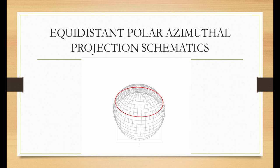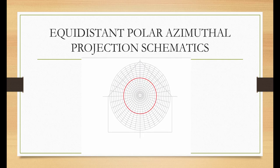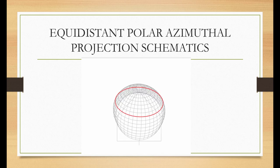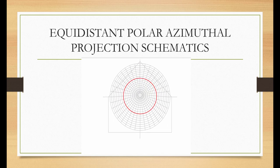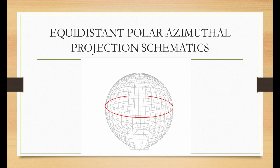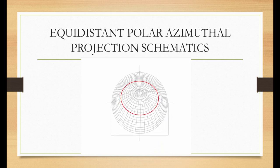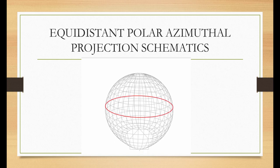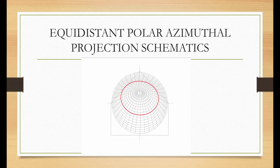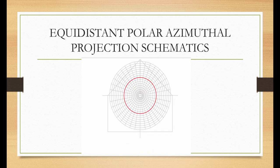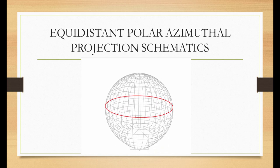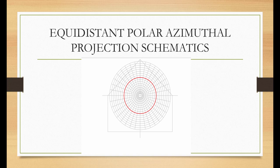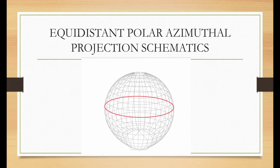The azimuthal equidistant polar aspect projection is neither an equal area nor a conformal projection. The outer meridian of a hemisphere on the equatorial aspect is a circle. Parallels on the polar projections are circles spaced at equidistant intervals.